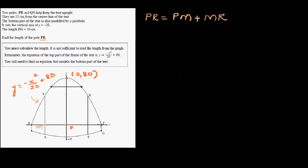Can we find this point? The coordinates of these two symmetric points would be the same. We're told that PR and QS are poles that keep the tent upright, and they are 25 centimeters from the center line of the tent. So the coordinate of M is (−25, 0) and the coordinate of N is (25, 0).